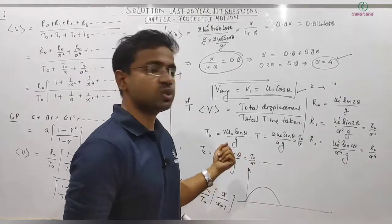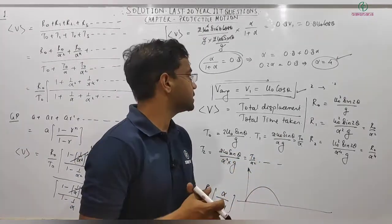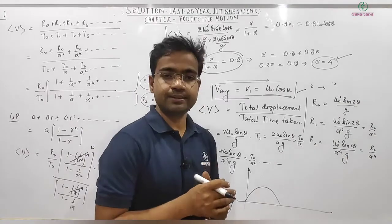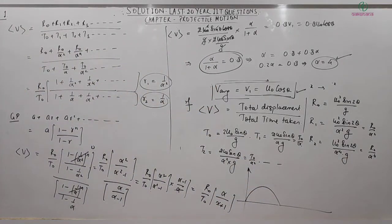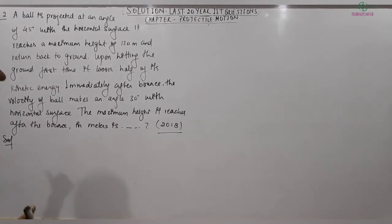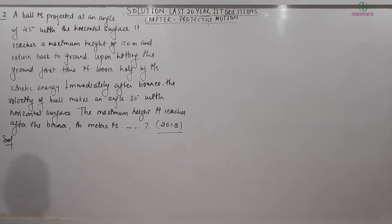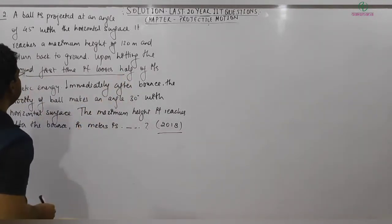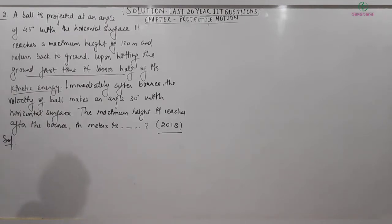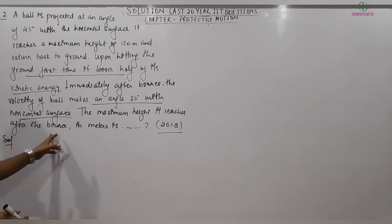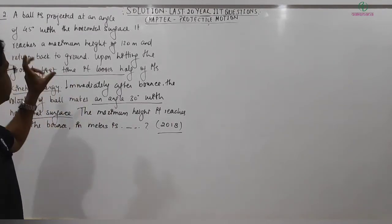That's a good problem. Let's see the next question. A ball is projected at an angle of 45° with the horizontal surface, reaches a maximum height of 120 meters, and returns to the ground. Upon hitting the ground for the first time, it loses half of its kinetic energy. Immediately after the bounce, the ball's velocity makes an angle of 30° with the horizontal. Find the maximum height it reaches after the bounce in meters.